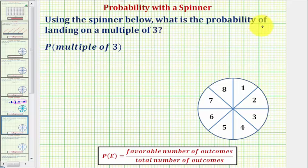Using the spinner below, what is the probability of landing on a multiple of three? To determine the probability of an event, we compare the favorable number of outcomes to the total number of outcomes.